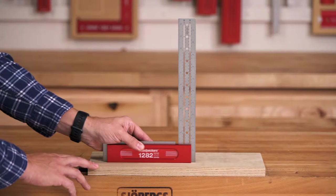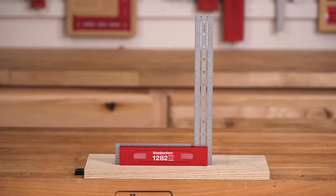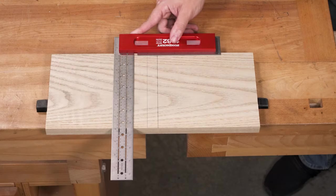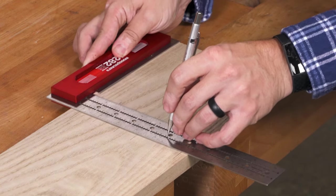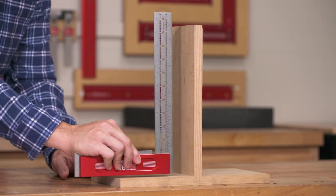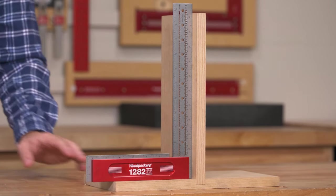For cabinet making and larger furniture, the 1282 SS is just the right size. Use the laser engraved scales along with the scribing guides to make joinery layout a smooth and seamless operation. Then use the same tool to check that your assembly comes together perfectly.